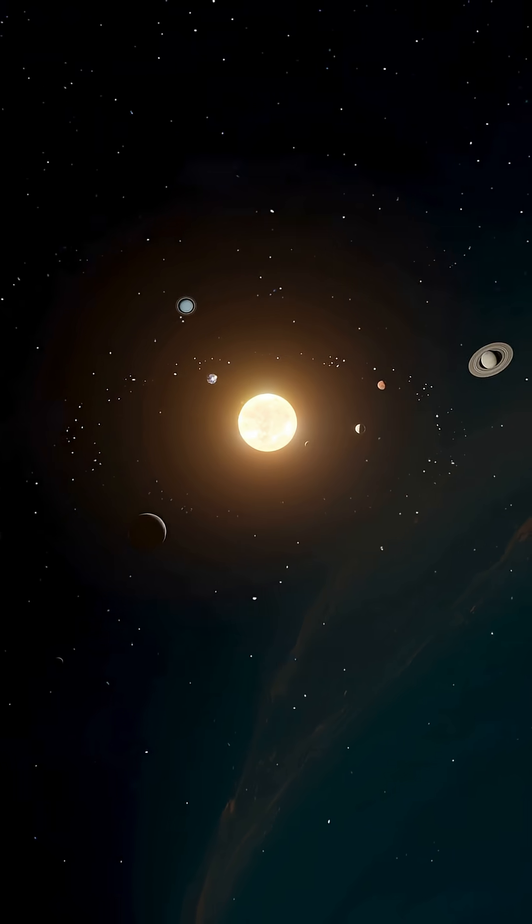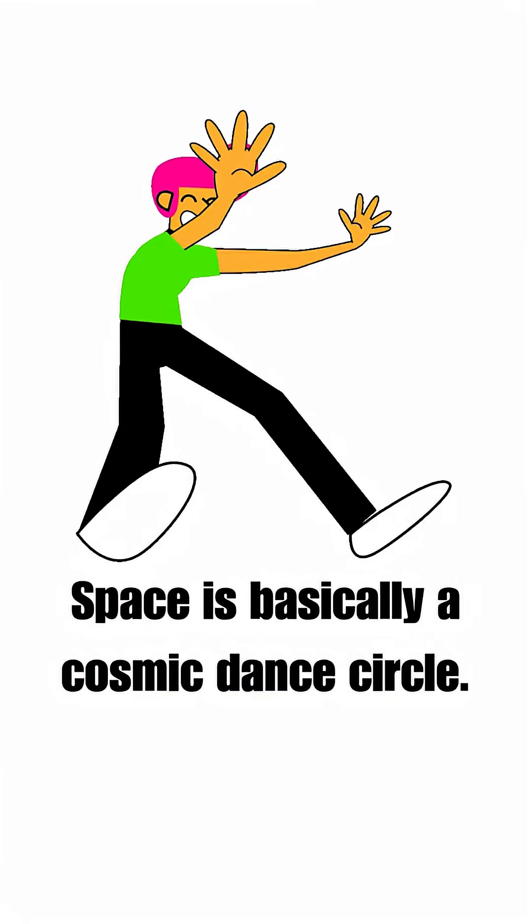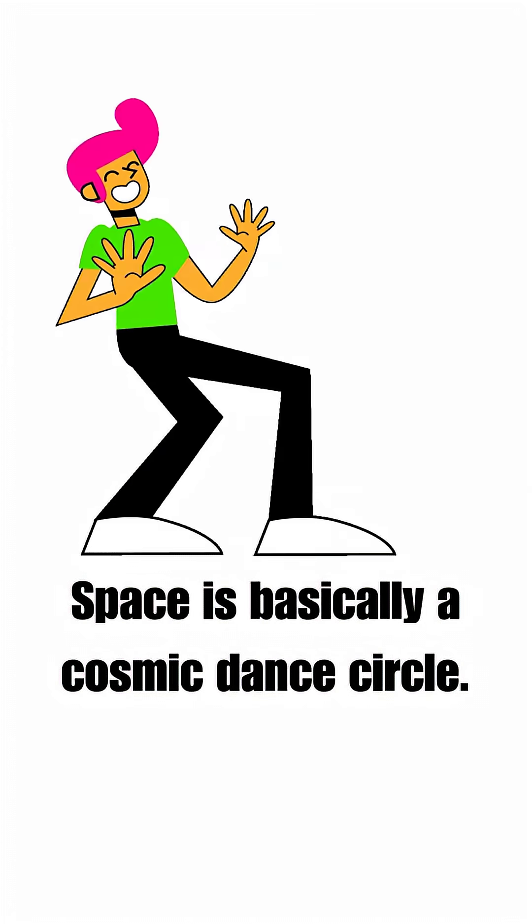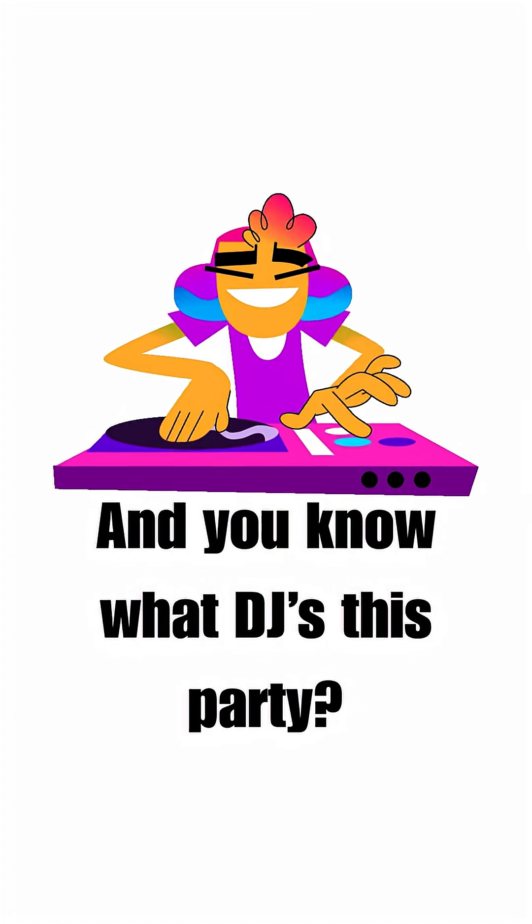Planets orbit stars. Moons orbit planets. Space is basically a cosmic dance circle. And you know what DJs this party?